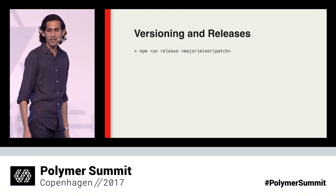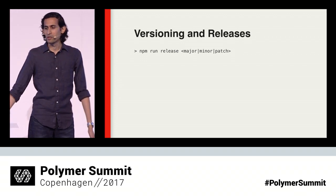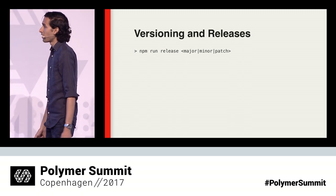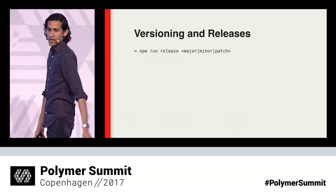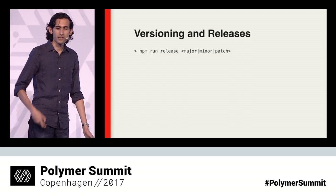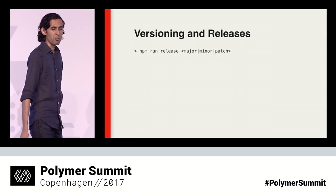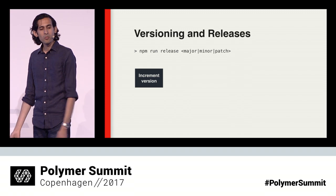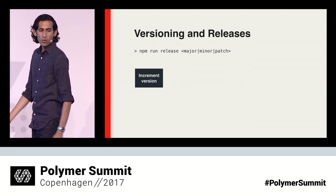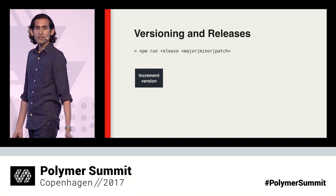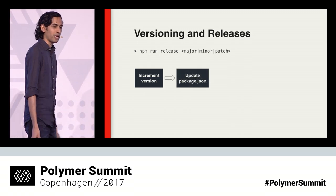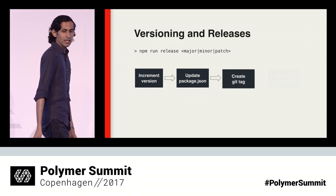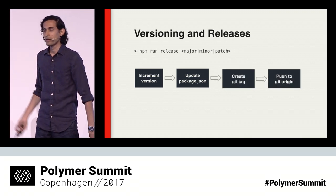Having API docs in a markdown file makes it easy to look up an element's API directly in the git or stash repo, or in our element catalog where we convert it to HTML. The second feature is easy and consistent semantic versioning. When you're ready to release a new version of your element, you simply run npm run release and tell it whether it's a major, minor, or patch version bump. Reboot then automatically figures out the current version number, auto-increments the appropriate position in the version string, updates package.json, creates the git tag, and pushes to origin — all in one quick step.